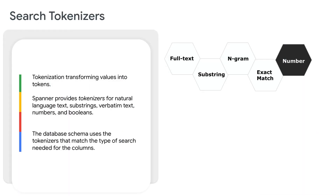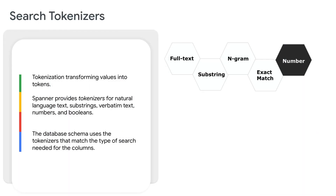In addition to indexing text, search indexes can provide an efficient way to index numbers using the tokenize number function. This is primarily used to augment FTS queries with conditions on numeric fields.